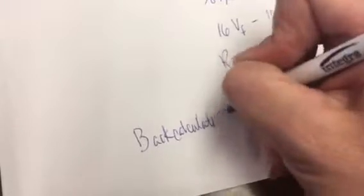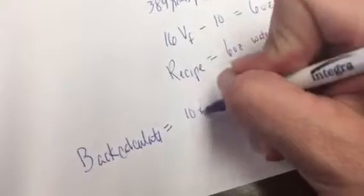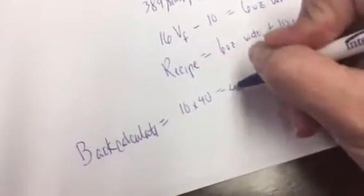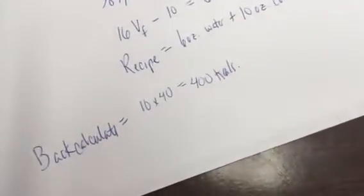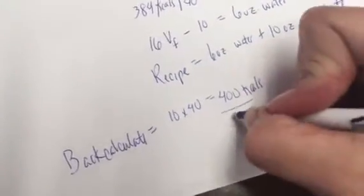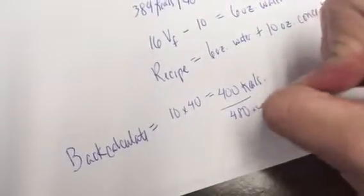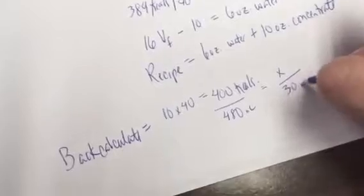Always determine if you did it correctly. So you can go down to the back calculation step. And so there we take our 10 ounces times 40 calories per ounce equals 400 calories total. We have a total of 16 ounces or 480 mLs. And we want to know how many calories is that per 30 mLs or 1 ounce.